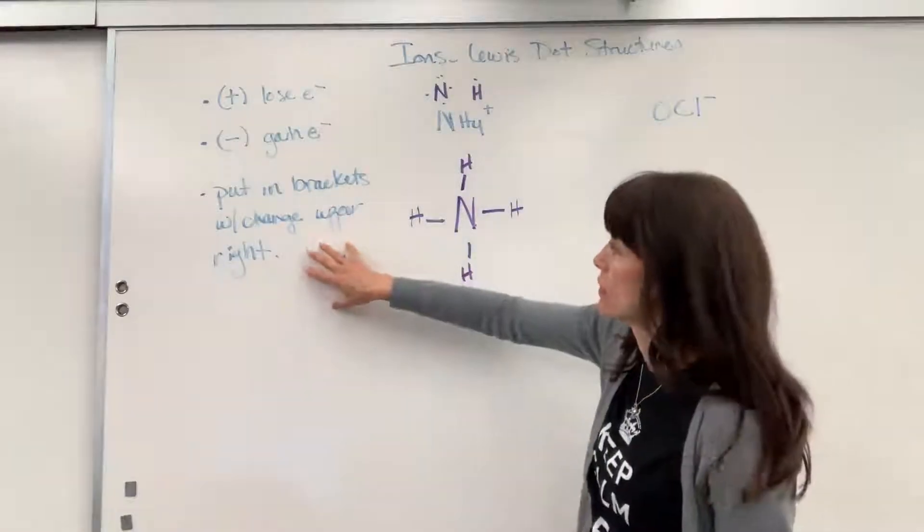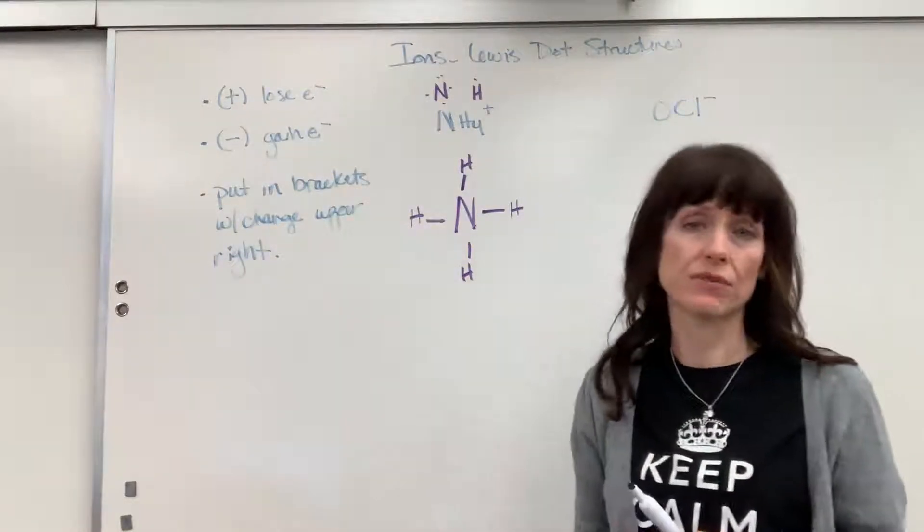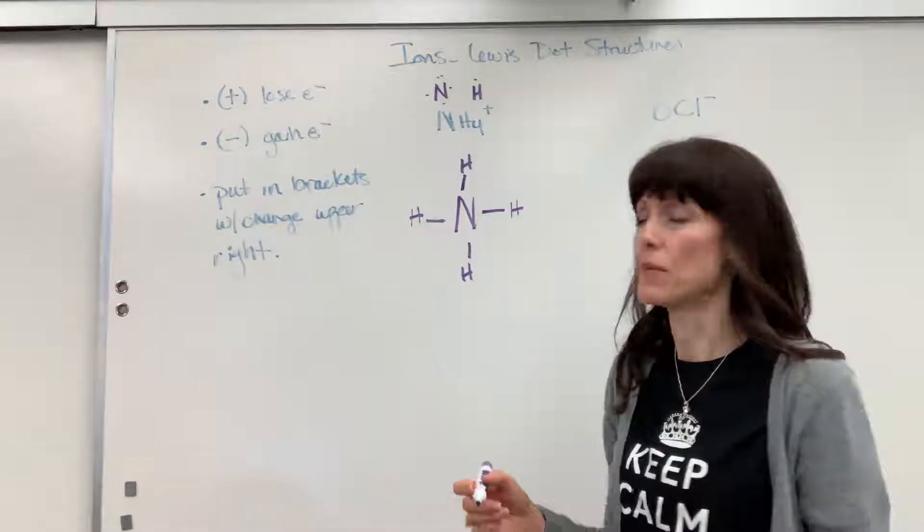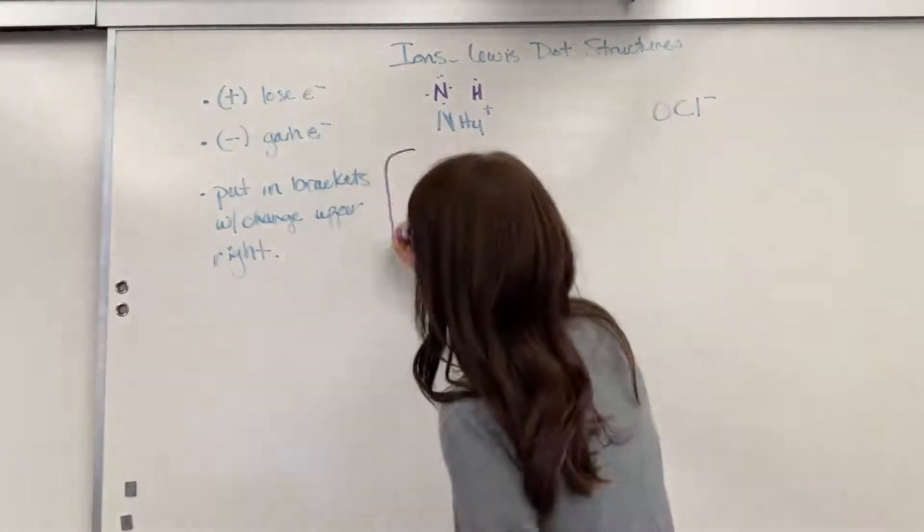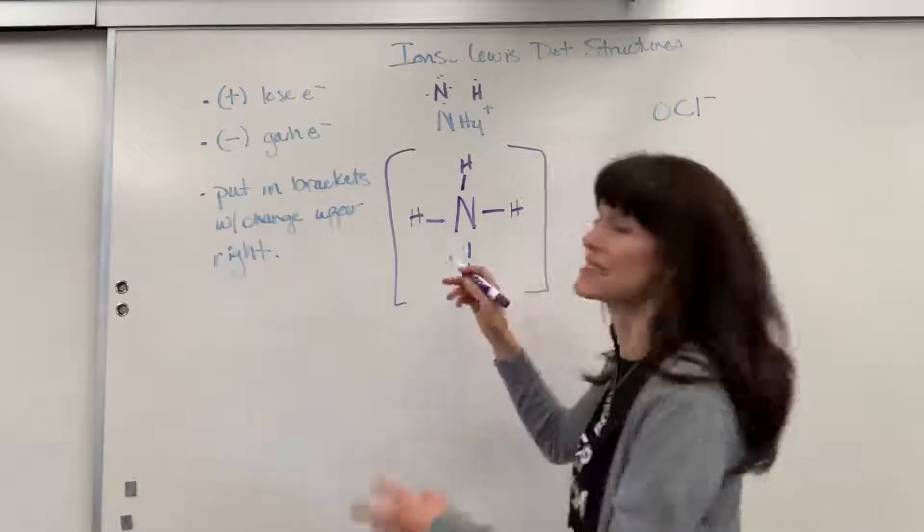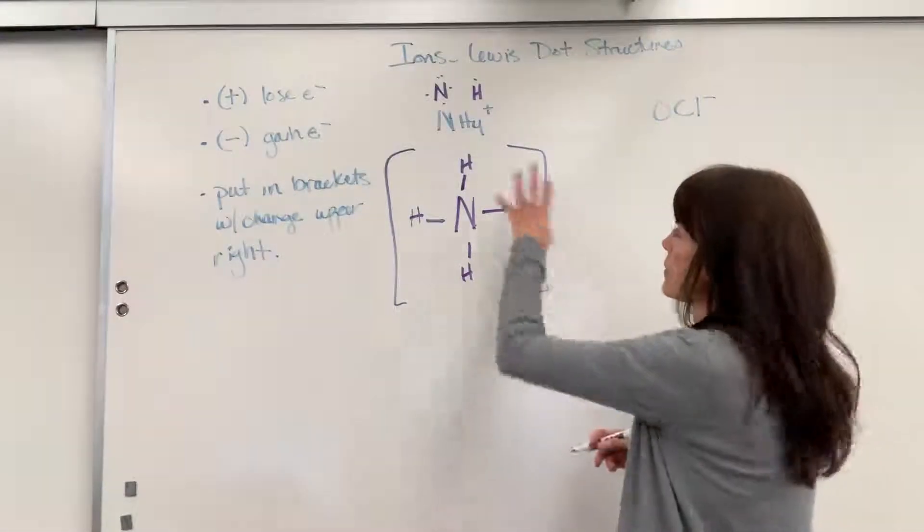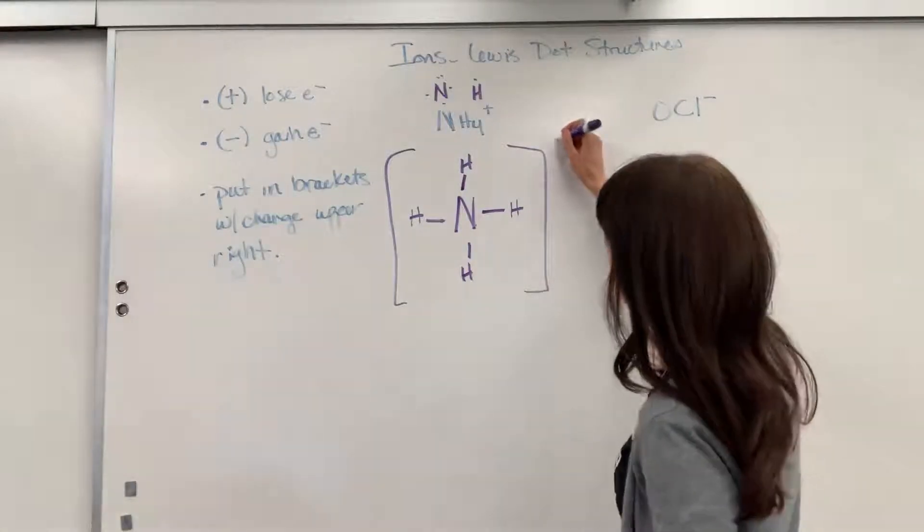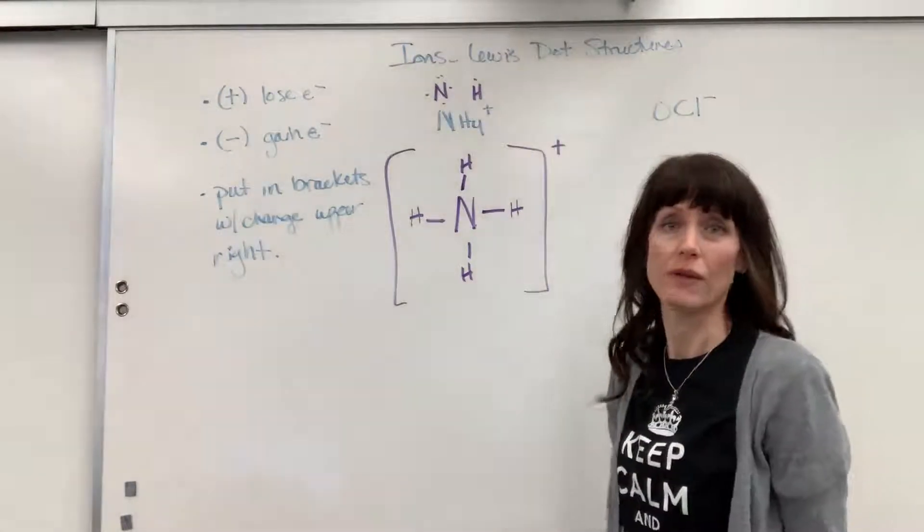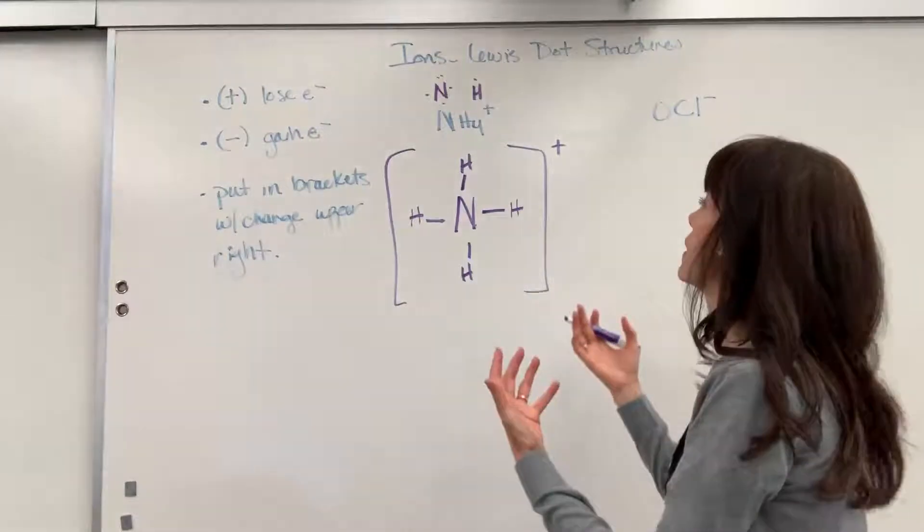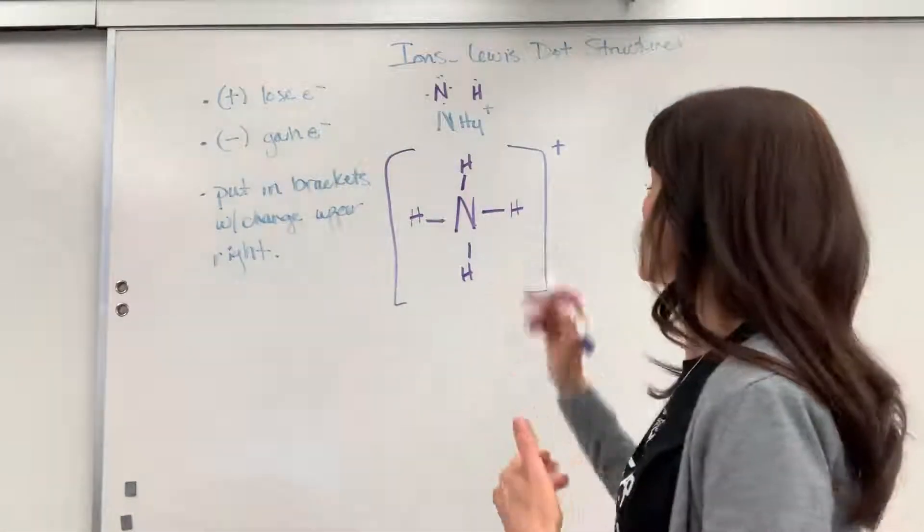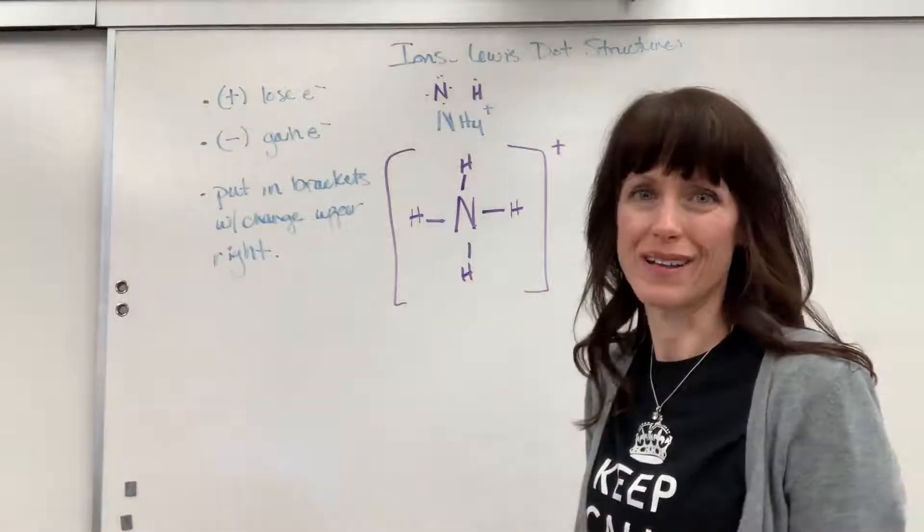Now to finish it off is this rule right here. We need to indicate to the reader that this was an ion, that it was a polyatomic ion. So you put brackets around the entire Lewis dot structure, and then in the top right-hand corner write the charge. So I would put a plus. And that tells the reader, oh, they lost one electron.